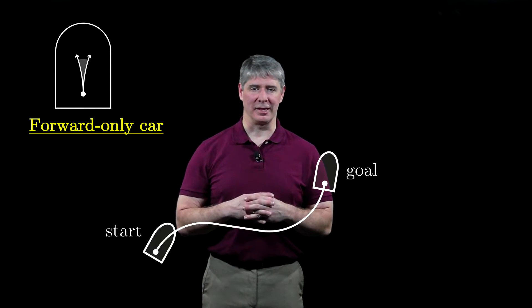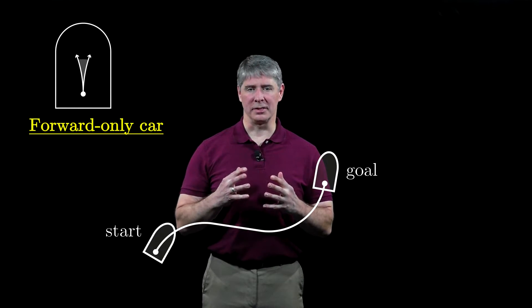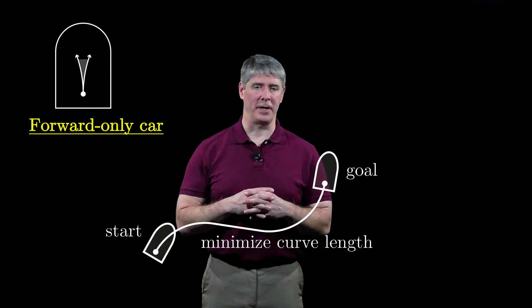Let's start with a car with no reverse gear. A typical path looks like this. Our goal is to find paths that minimize the length of the curve followed by the point midway between the rear wheels.